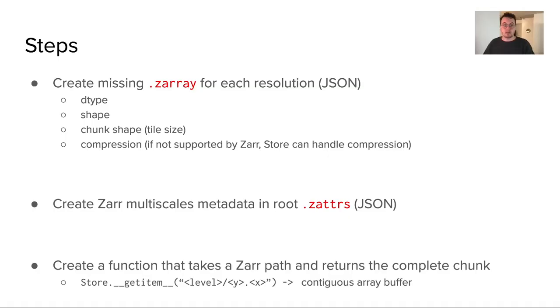So the steps to create these particular store objects are to create missing Zarr array metadata for each resolution in your particular format, create the multi-scale metadata that describes where each of these arrays exist in the store, and then ultimately write a function that takes a Zarr path and returns a complete chunk from that store as described by the particular metadata.